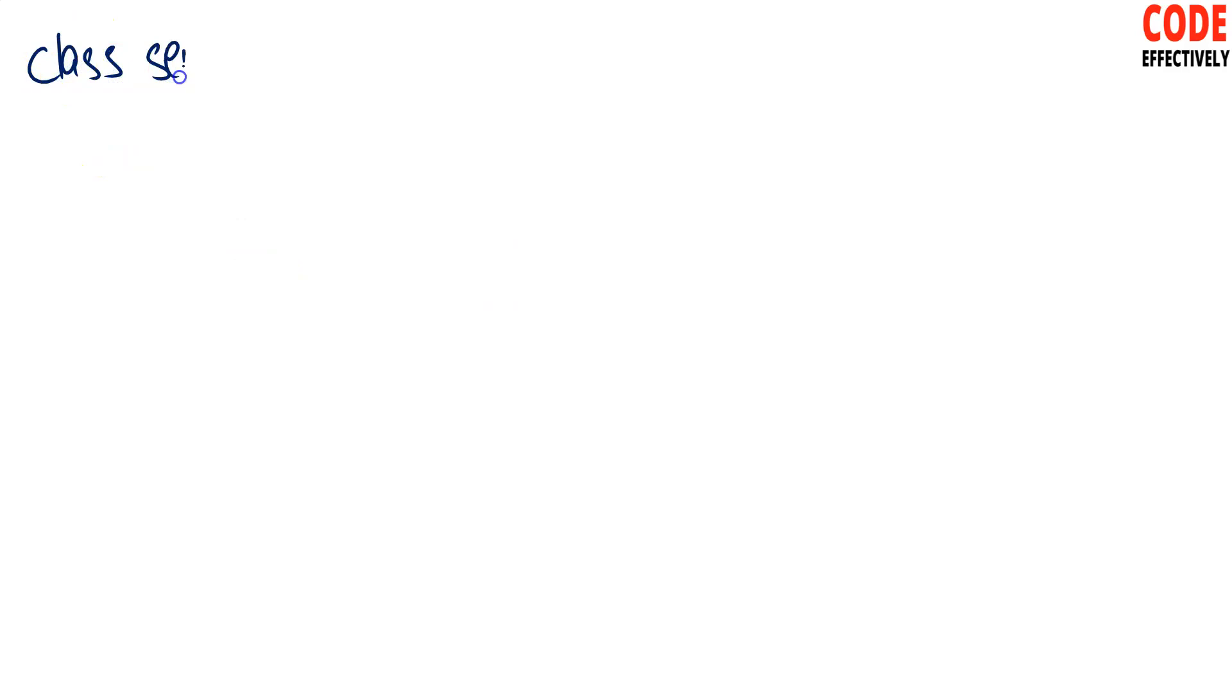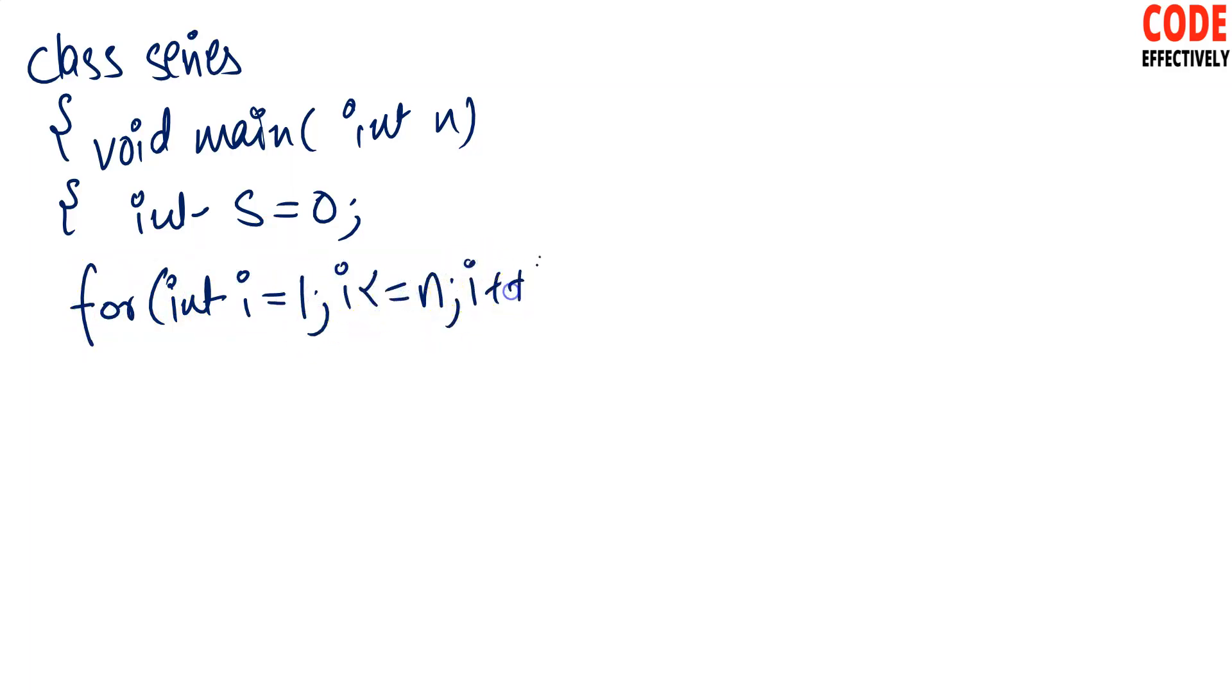I will write the program here so that you will know how to write the program. Many people write the program, so I will write it so that you will know exactly how to write the program. Now I will write the sum variable. Int s equals to 0. Now I will write the program here. Int i equals to 1, i less than equals to n, i plus plus. Now the main part is the program.